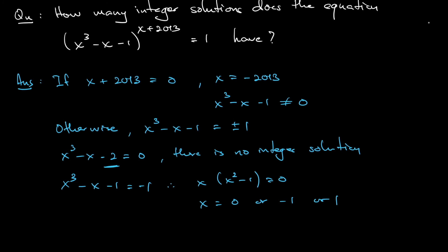But because if the base is negative 1 now, I need to make sure that the power needs to be even, right? Negative 1 only when the power is even then equals 1. So notice when x is 0, the power x plus 2013 is still odd. If x is minus 1, this is even. I can take this.